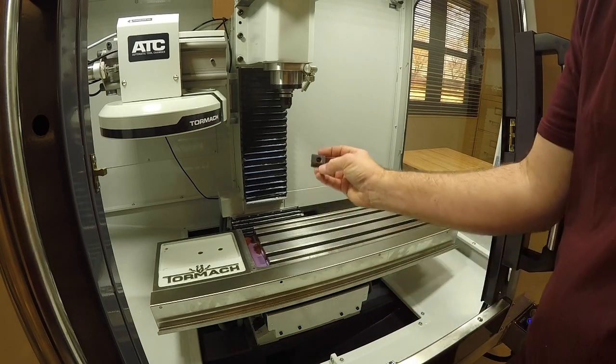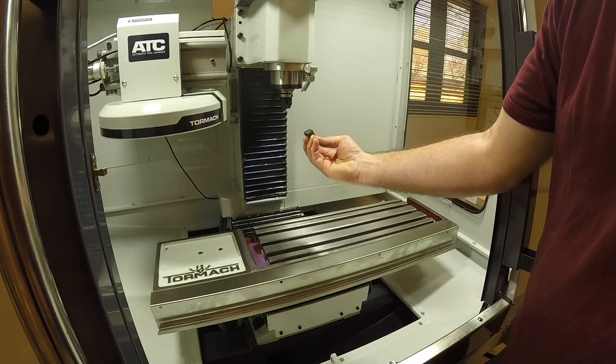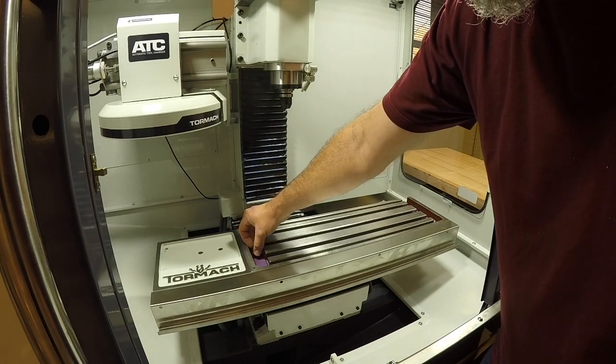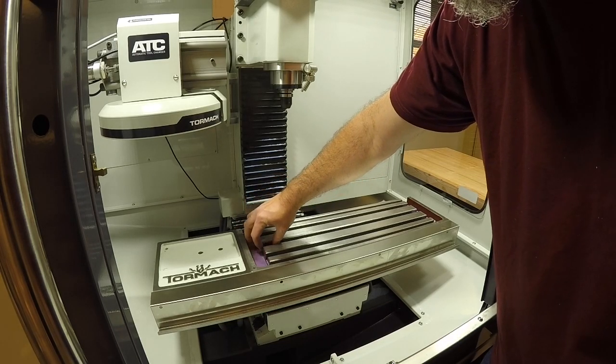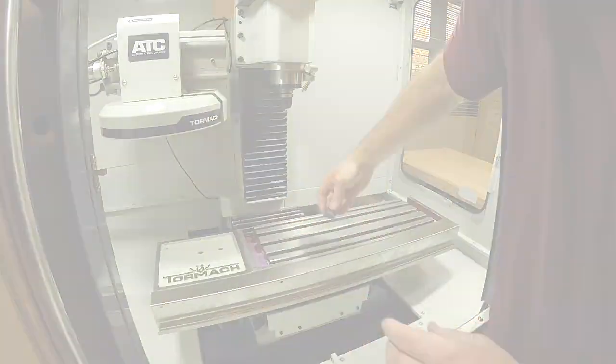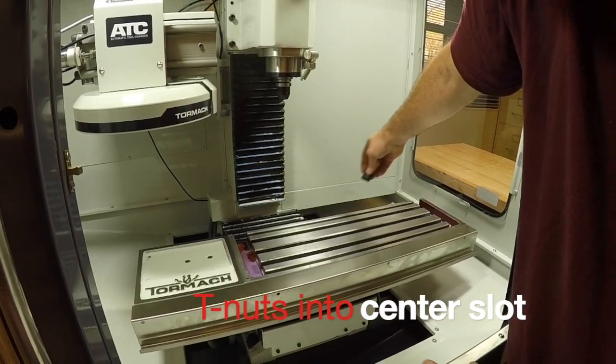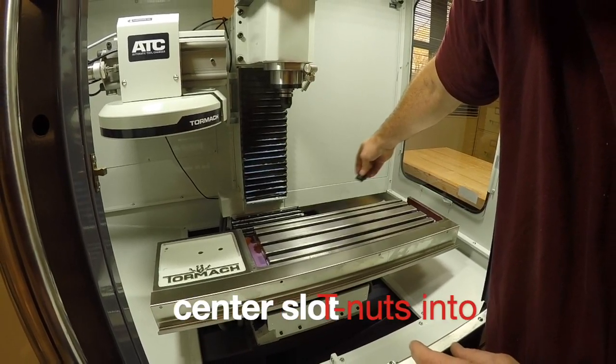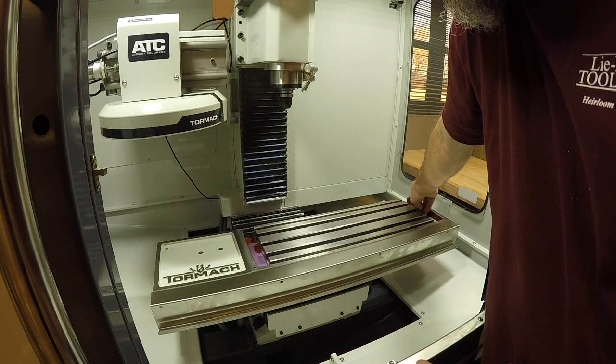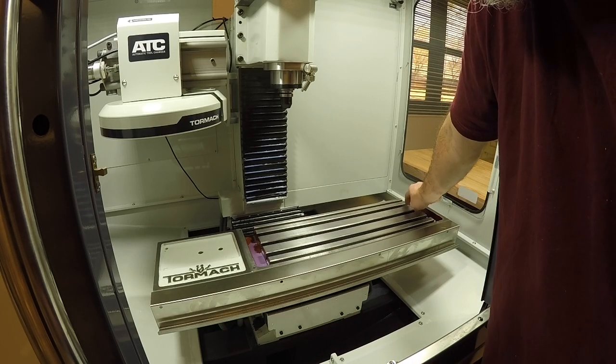We're going to be putting the vise in here. We need to put some T-nuts into the center slots in our table. So I'm going to put it in each side and slide it towards the middle.